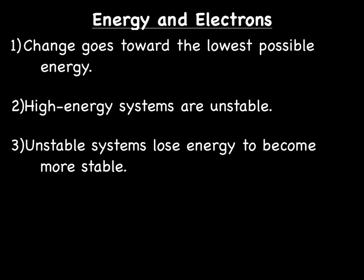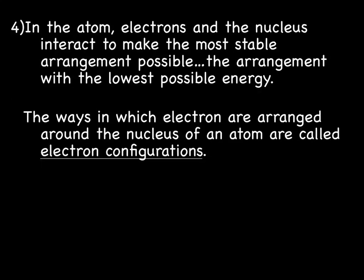So in nature, as well as chemistry, unstable systems lose energy to become more stable. So that kid that's running around and crying and being all crazy is really trying to use up energy to become a more stable child. In the atom, electrons and the nucleus interact to make the most stable arrangement possible. And the most stable arrangement is going to be the one with the lowest possible energy, because higher energy systems are not stable.